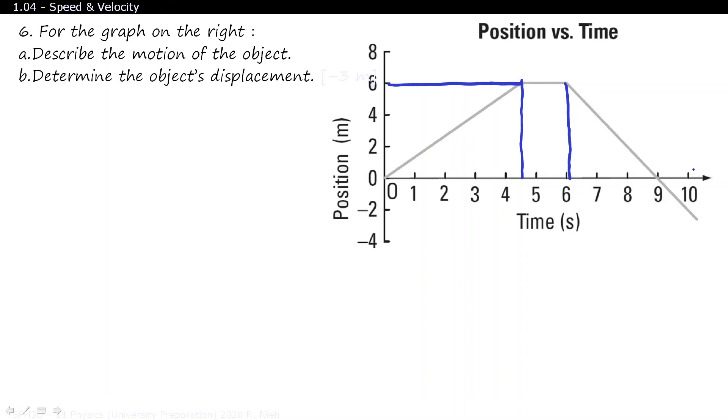So when you try to determine the object's displacement, you could do 6 minus 9, which will give you negative 3. Or just by simply looking off at the graph, the person finishes off at negative 3 meters. So that's the person's displacement. Delta D equals negative 3 meters. If we had a direction for this, we would not leave the minus sign here. But since there's no direction associated with our final answer, we just leave it as a minus sign.